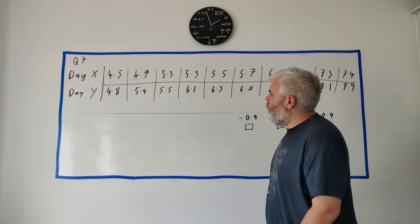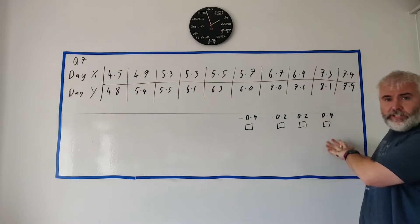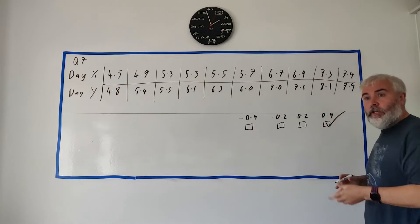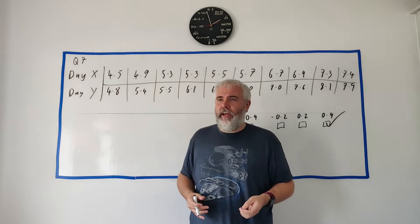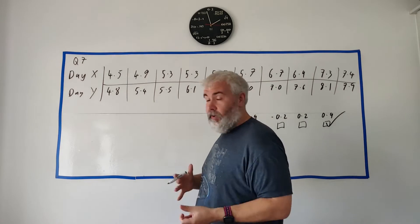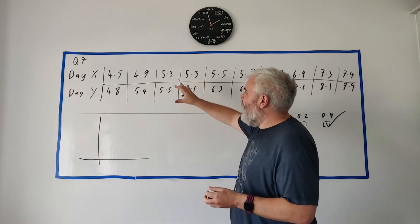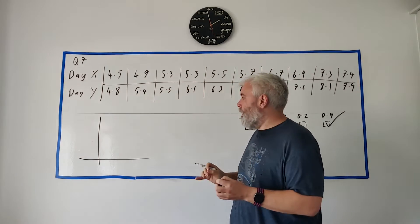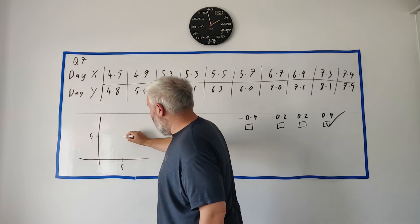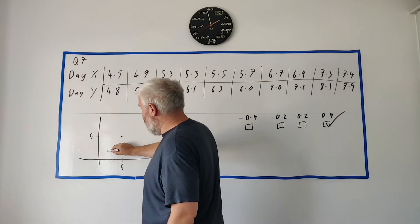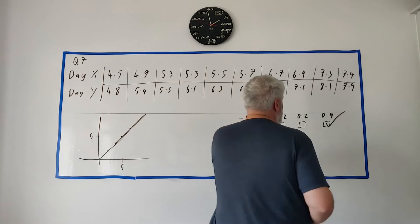Moving on to part three — they give you four numbers and tell you it's the correlation coefficient. The answer is 0.9. To understand why, here's a little about correlation: if every animal went into the shelter and came out at the same weight, and you plotted all those numbers on a graph — went in at two, came out at two; went in at three, came out at three — they would look like a straight line. That would be a perfect correlation, a correlation of plus one.